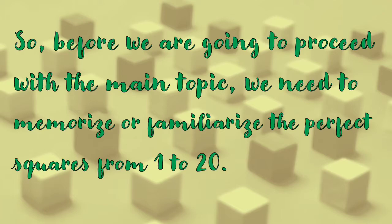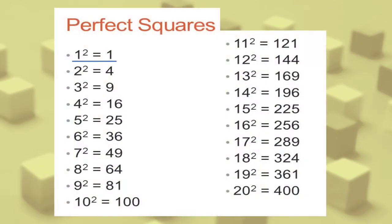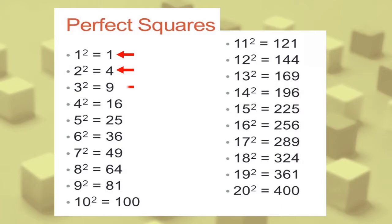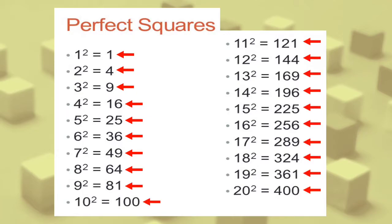I have here the list. We have 1 squared is equal to 1, 2 squared is equal to 4, 3 squared is equal to 9, 4 squared is equal to 16, and so on. So our perfect squares here are 1, 4, 9, 16, 25, 36, 49, 64, and so on.